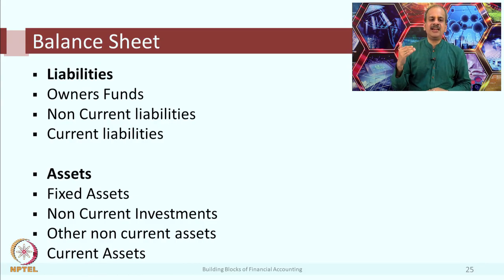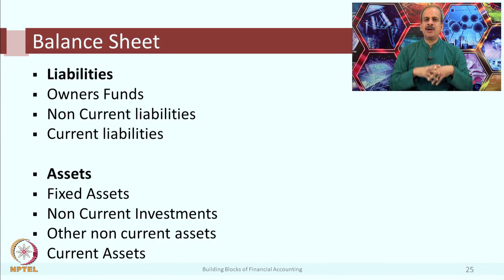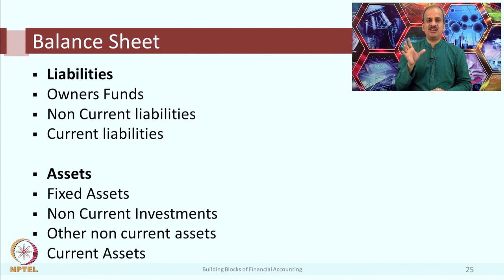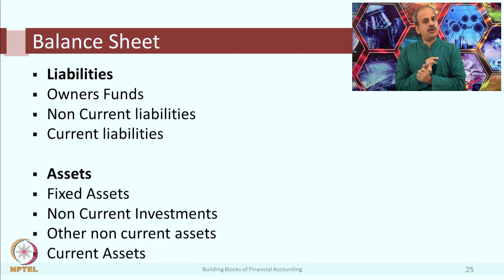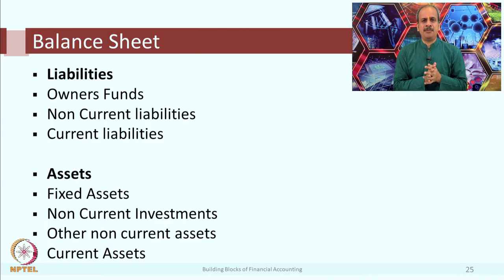The second item is non-current liabilities. In the earlier balance sheet we called it borrowings as an example, but any liability which is long-term in nature is called a non-current liability. Mainly it will include borrowings or loans, and it can also include any other item which you have not paid within one year's time.